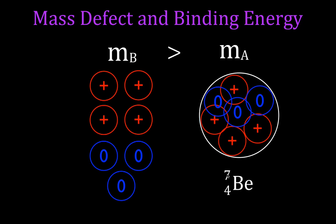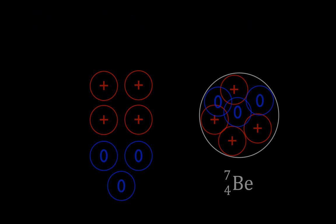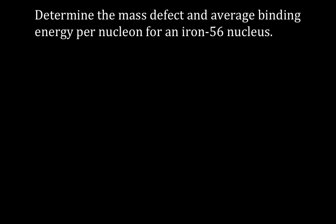Now we're going to do an example where we determine the mass defect and the average binding energy per nucleon for iron-56. The isotope symbol for iron-56 has mass number 56, because there are 56 protons and neutrons total. Iron has 26 protons as its atomic number. First, we're going to look up the mass of a proton.